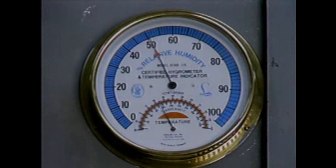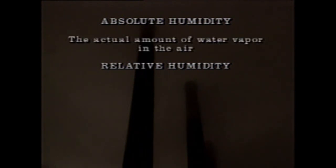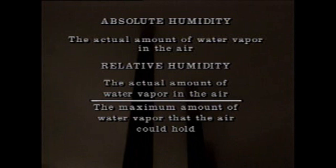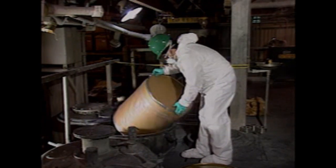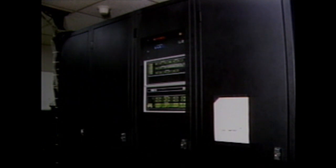Water is present in many process materials as well as in the air surrounding process equipment. Measurements of water content are often expressed as humidity or moisture. Humidity is a measure of the amount of water vapor in a given volume of air. Absolute humidity is the actual amount of water vapor in the air, often measured as ounces of water per cubic foot of air. Relative humidity is a ratio of the actual amount of water vapor in the air at a specific temperature to the maximum amount of water vapor that the air could hold at that temperature, expressed as a percentage. Measuring and controlling humidity is important because it can affect moisture-sensitive materials used in a process, as well as electronic equipment used to monitor and control the process.